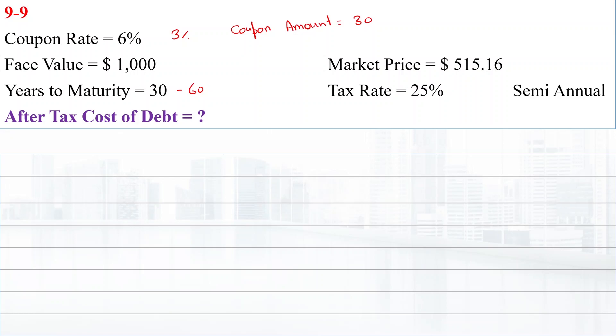To apply the IRR formula, we need to calculate the present value of this bond using different discount rates. We need a present value lower than 515.16 and one higher than 515.16.